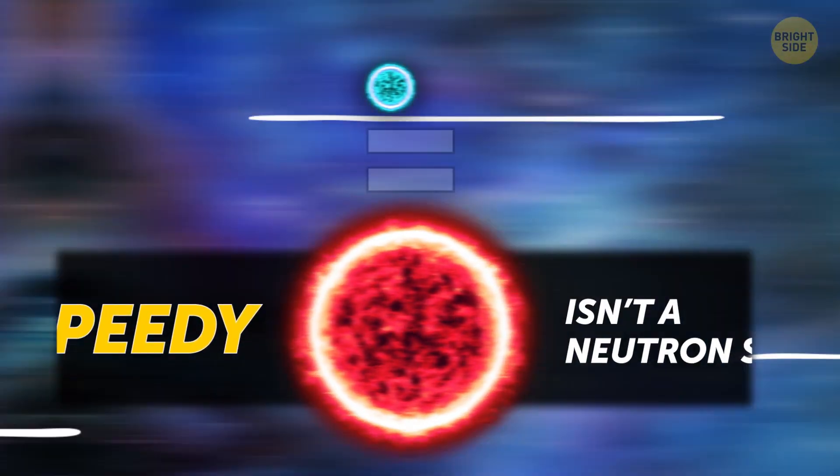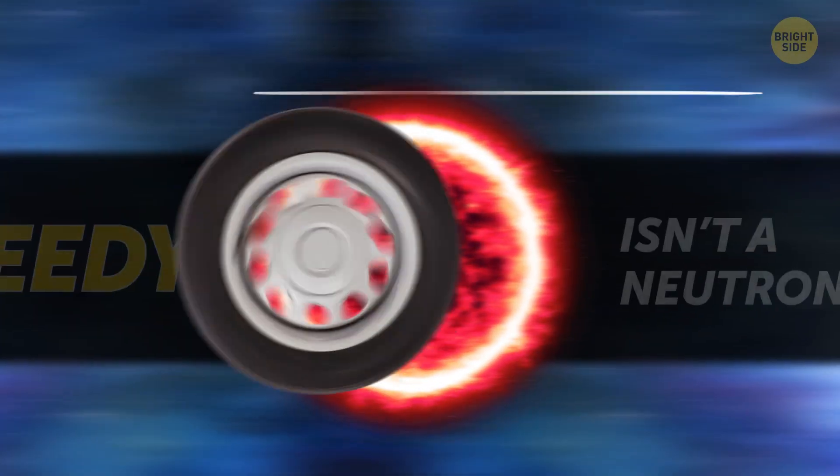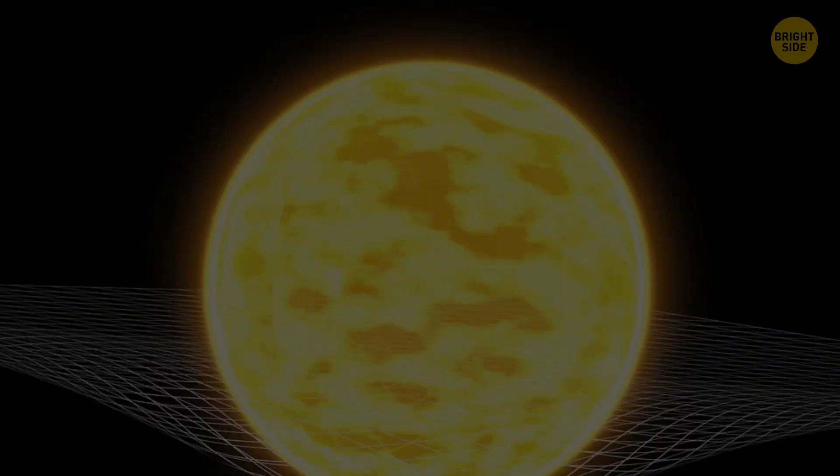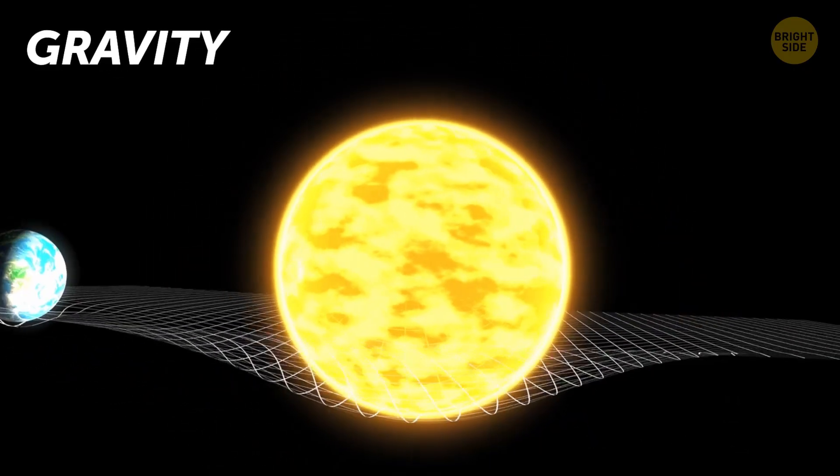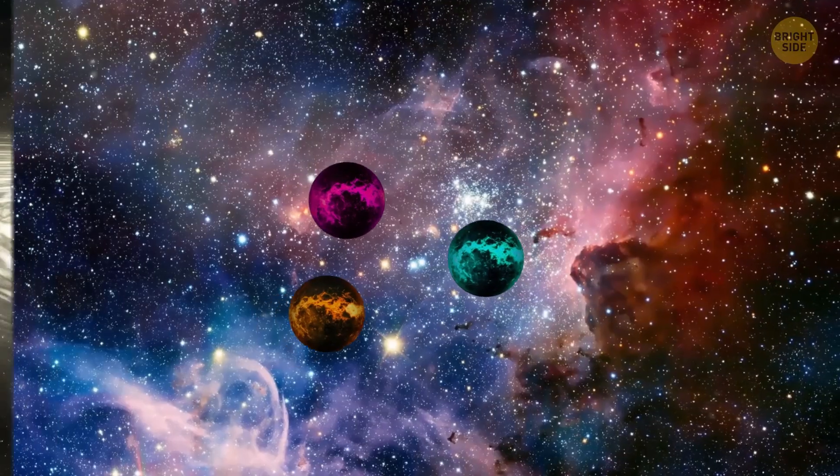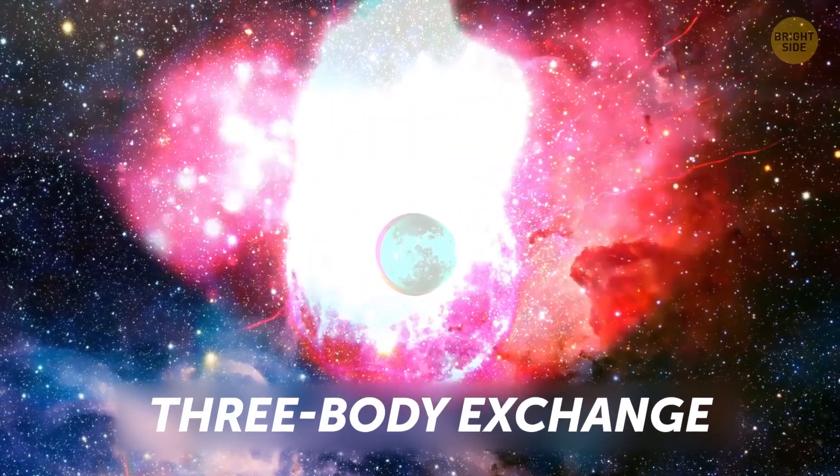But speedy isn't a neutron star. So why is it getting expelled from the galaxy like a spare tire improperly secured to the back of a truck? The answer is gravity. The slightly less simple answer is gravity from black holes. And the vastly more complicated answer is what scientists call a three-body exchange.